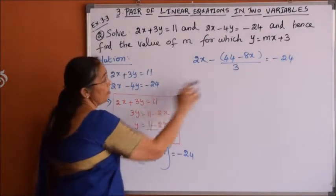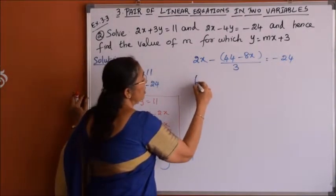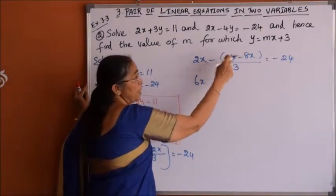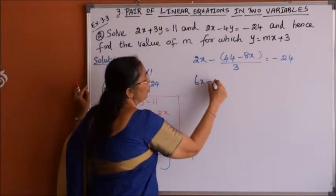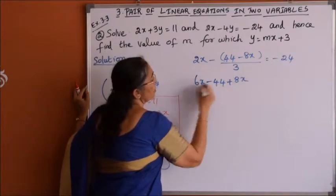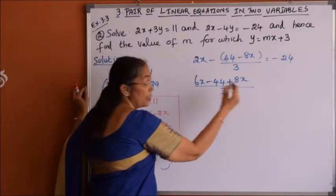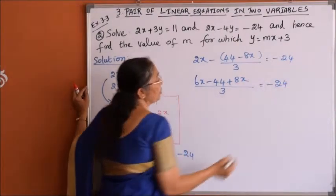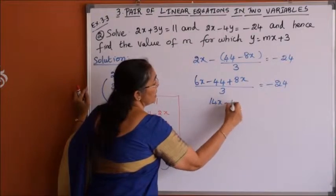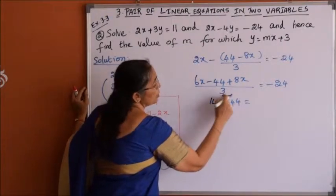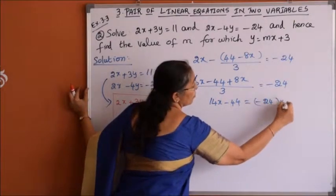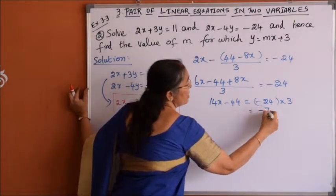Now we take LCM as 3, so we get 6x. Multiplying the terms with the negative sign in the bracket gives minus 44, and minus into minus gives plus 8x, divided by 3 equals minus 24. So 6x plus 8x gives 14x, and 14x minus 44 equals minus 24 times 3, which is minus 72.